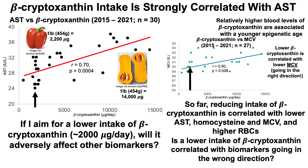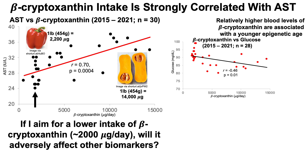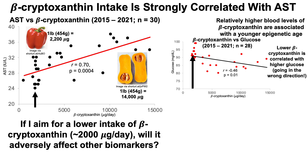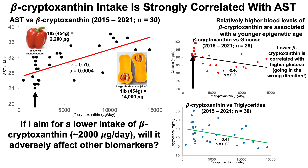Are there any biomarkers that would be negatively affected by reducing my beta-cryptoxanthin intake? The answer is maybe yes. There's a significant negative correlation between beta-cryptoxanthin and my glucose levels — the higher my beta-cryptoxanthin intake, the lower the glucose, and glucose increases during aging. So higher levels of beta-cryptoxanthin would seem favorable for glucose. If I were to cut my intake based on that trend line, it may go in the wrong direction for glucose levels. Similarly for triglycerides: cutting to about 2,000 micrograms per day would be correlated with higher triglycerides — up to about 60 milligrams per deciliter in my data — also going in the wrong direction, as triglycerides also increase during aging.